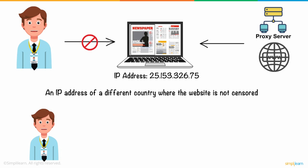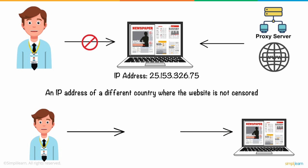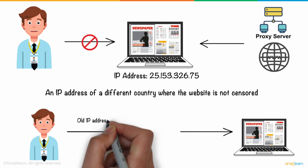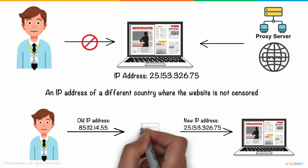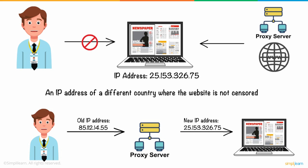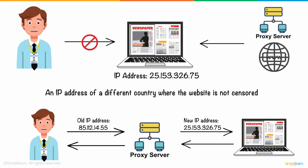Following this process, whenever Jonathan visits that website, the website administrators see the new IP address assigned via proxy server and see no reason to deny access to their site. Once the proxy server is able to access the website, the content is passed on to Jonathan's system via the same channel.